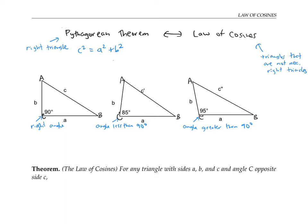Loosely speaking, the law of cosines says that c squared is equal to a squared plus b squared plus a correction factor, where the correction factor depends on the size of the angle that's opposite side c. In this first triangle on the left, the angle opposite to side c is a right angle, so we know that c squared is equal to exactly a squared plus b squared.